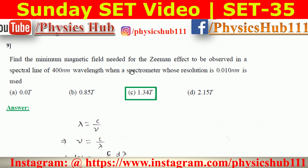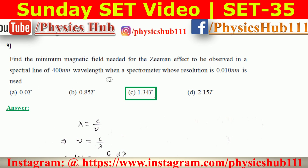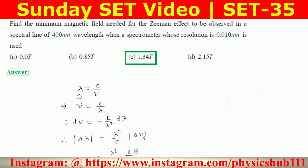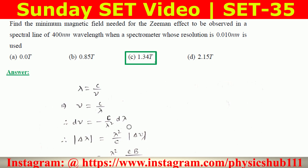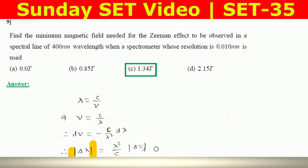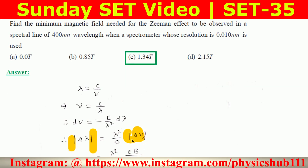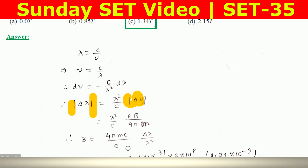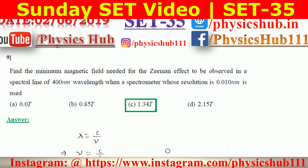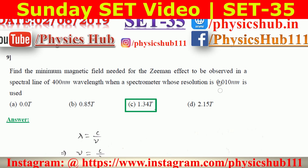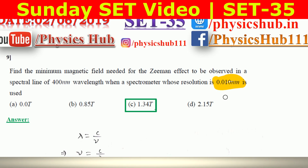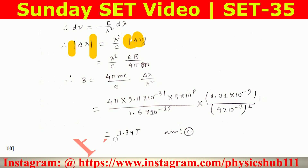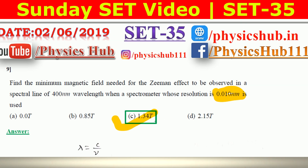Question 9: Find the minimum magnetic field needed for the Zeeman effect to be observed in a spectral line of 400 nm wavelength, using a spectrometer with resolution 0.010 nm. Starting from ν = c/λ, differentiating gives dν = (c/λ²)·dλ. The Zeeman splitting is Δν = eB/(4πm), so B = 4πmc·Δλ/(e·λ²). Substituting all known values with Δλ = 0.010 nm and λ = 400 nm gives B = 1.34 T, matching option C.